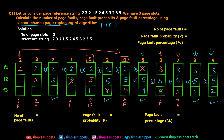One important point to note: whenever a particular page is added for the first time, its reference bit is always set to 0. When page 2 was initially added, its reference bit was 0; when page 3 was added, its reference bit was also 0. The reference bit is only changed to 1 when the page appears a second time, because now it will get a second chance.